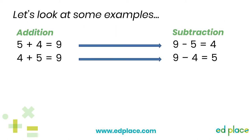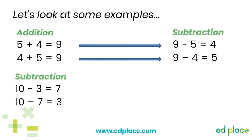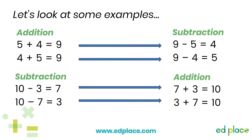Let's have a close look at these examples. Firstly, let's look at those additions: 5 add 4 equals 9, or 4 add 5 equals 9. The inverse number sentences use the same digits and they are subtraction sentences: 9 take away 5 equals 4, and 9 take away 4 equals 5. Now for the next example — a subtraction first: 10 take away 3 equals 7, or 10 take away 7 equals 3. The inverse addition sentence is 7 add 3 equals 10, or 3 add 7 equals 10. Did you notice this last example is also a number bond to 10? These number bonds do come in handy.